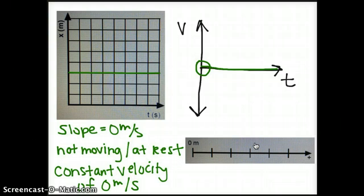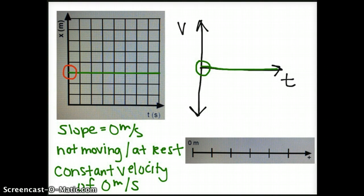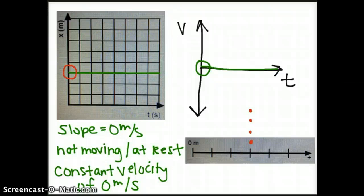Let's look at the four position time graphs we drew before and make motion maps for each of them. The first graph had an object at rest, so the motion map would look like dots on top of each other. But because the object starts at a positive position — as shown by the y-intercept on the position versus time graph — we also put it at a positive position on our motion map. Each dot represents one second of time: first dot, second dot, third dot, fourth dot, and so on.